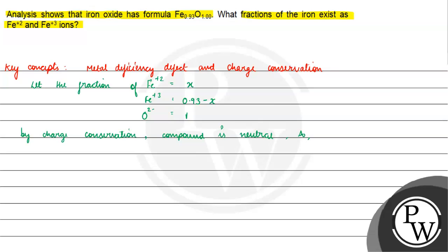Iron 2+ has charge +2. Iron 3+ fraction is 0.93-x. Oxygen charge is -2, and its fraction is 1. So this equals 0.